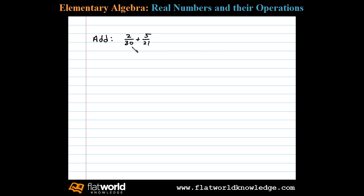Here we're asked to add 2 over 30 and 5 over 21. To add fractions, we need a common denominator, so we need the LCM of 21 and 30. Now the LCM is 210. 21 times 10 is